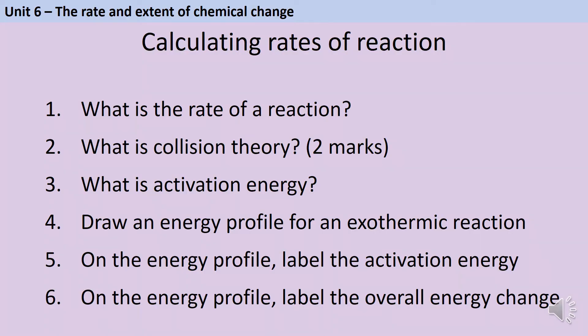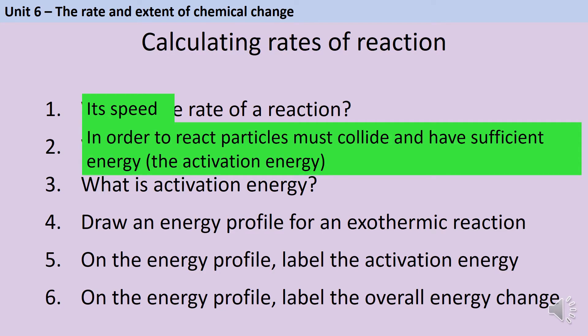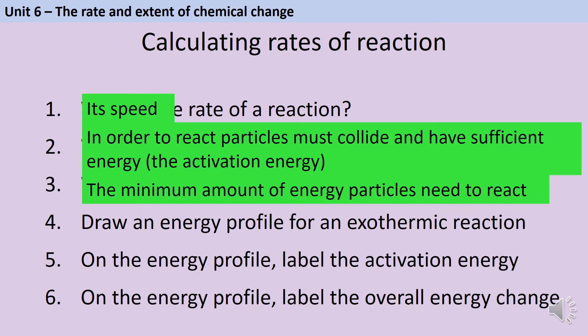The rate of a chemical reaction is its speed, how fast it's going. To understand rates of reaction we need to understand collision theory: the idea that for a chemical reaction to take place, particles need to collide and have a minimum amount of energy called the activation energy, which is different for every chemical reaction. Activation energy is the minimum amount of energy that particles need to react.